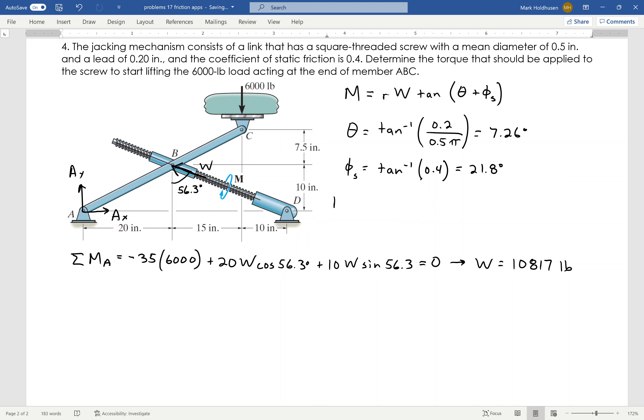And again, what I'm trying to find here is this moment. Well, my radius is the radius of the screw. That's going to be quarter inch, diameter is 0.5. W I just found to be 10,817, like so.